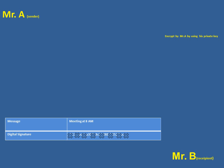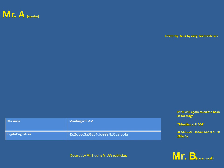The message and digital signature move to Mr. B. Mr. B independently calculates the hash of the message 'meeting at 8 a.m.' — arriving at, say, 4526d. Then, in the second step, he decrypts the digital signature using Mr. A's public key. He then matches both hash values — the one he calculated and the one arrived at by decryption. If both values match, the message is fine and has not been tampered with.